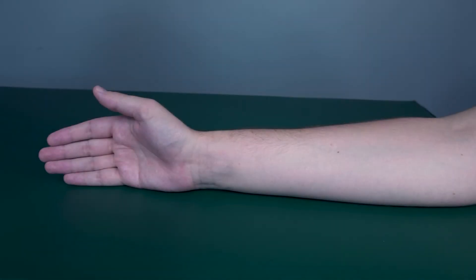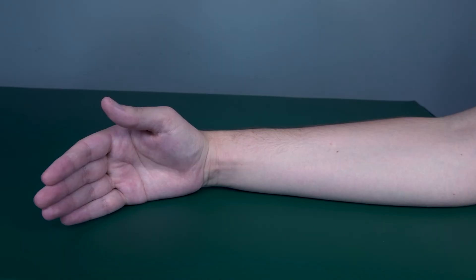Testing wrist flexion, gravity eliminated position. Patient will be in a seated position, forearm lying on a table or flat surface with the hand in a neutral position. You'll have your patient perform wrist flexion in this position to the best of their ability.